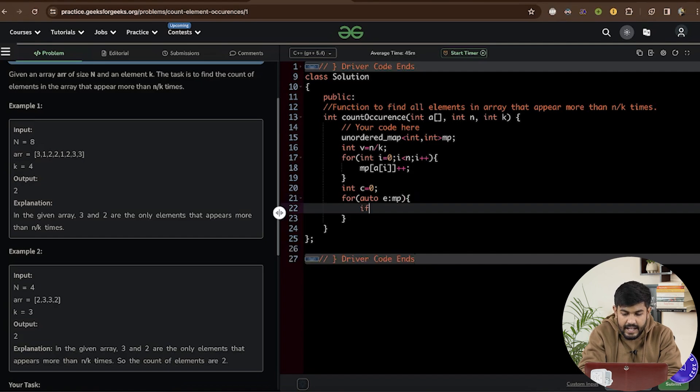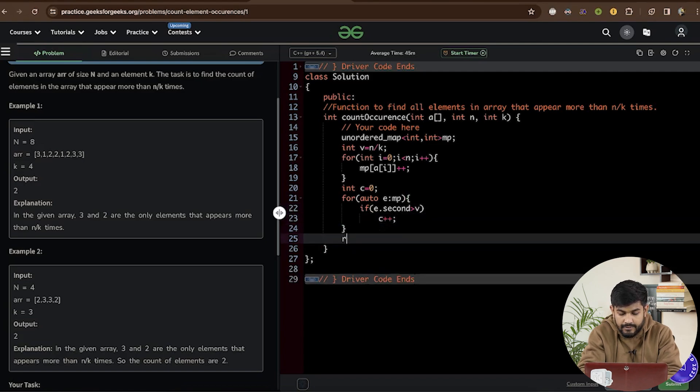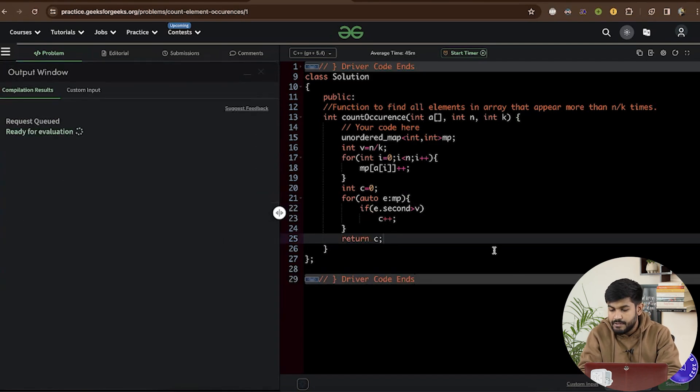And if at any point e dot second, that is the frequency is greater than the value, what we would be doing is we would be incrementing the count. At the end, we would be just returning the count. Let's just compile it and see how many errors we are making.